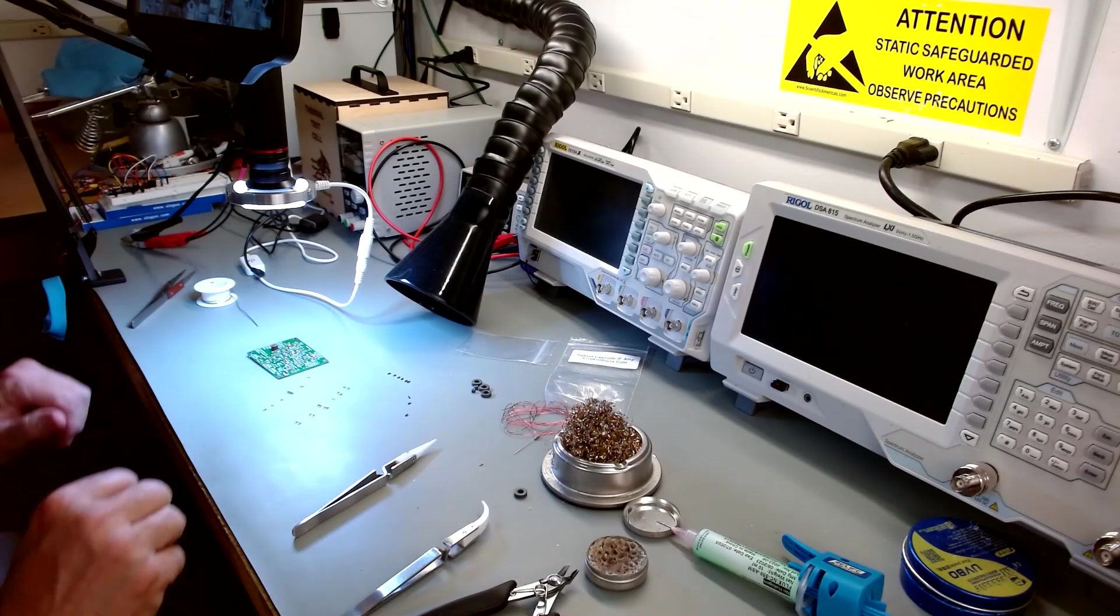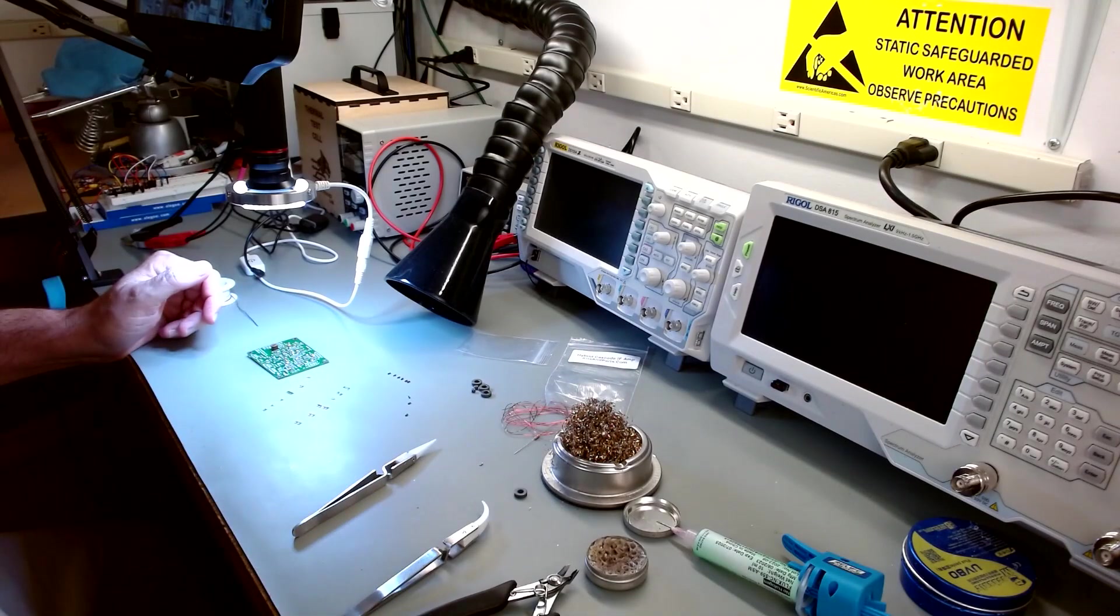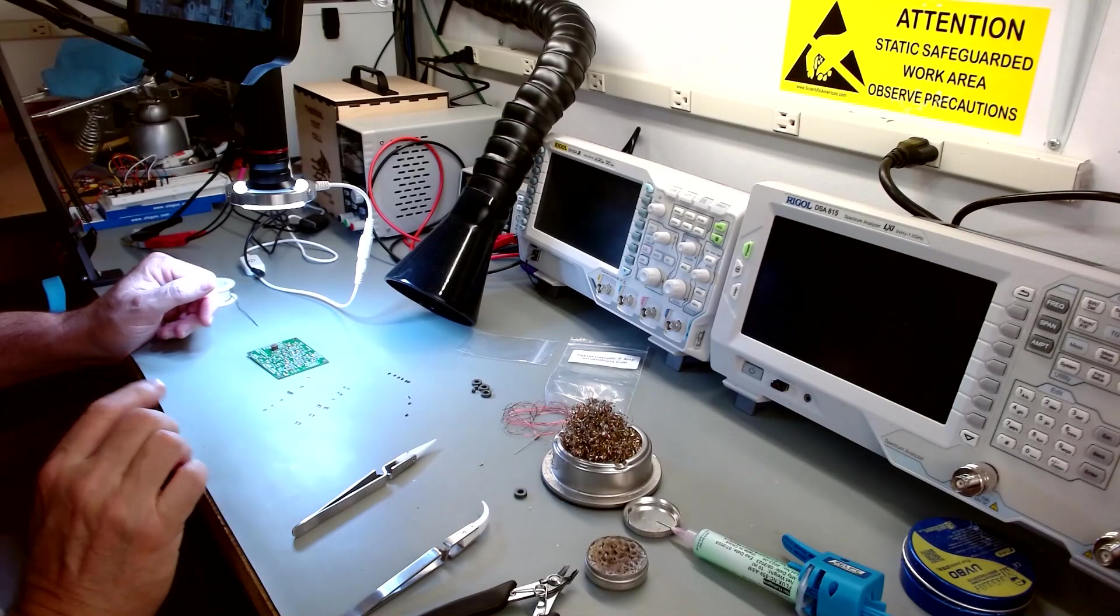Hello YouTube RJ. This is part two of the IF amp build and we're going to jump right into it and continue on. We're going to put the resistors on now.